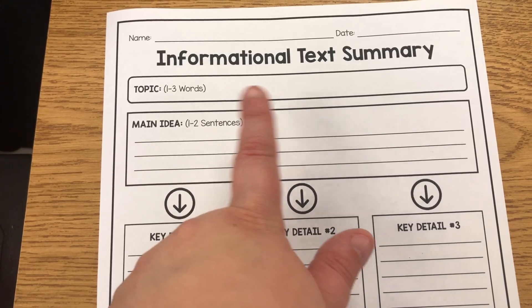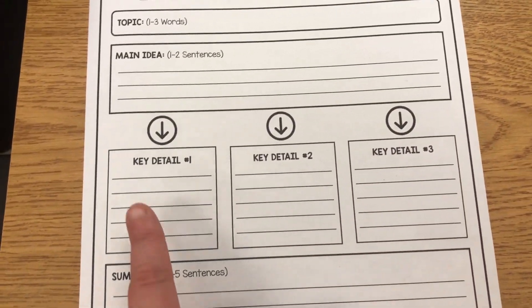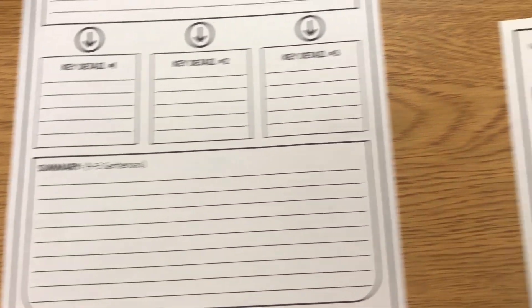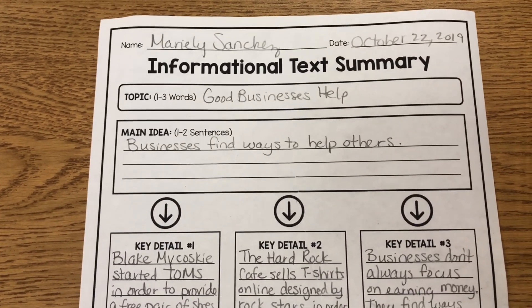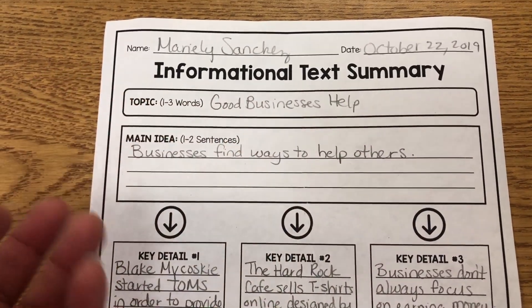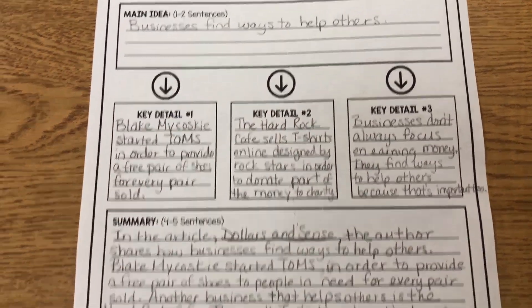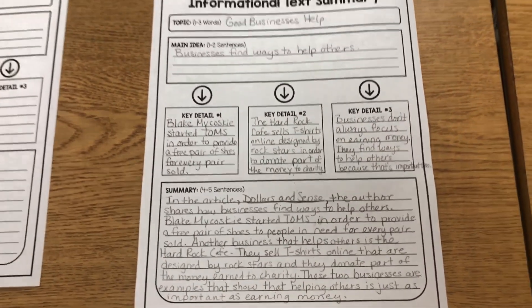After social studies, we went back to Reading Wonders: 'Dollars and Cents,' focusing on main idea and summarizing. Students put together everything we discussed about topic and main idea, finding three key details to support the main idea and then forming their summary. I gave them a handout I made quickly — it had the topic, main idea as one to two sentences, three key details, and then putting it all together into a summary paragraph. I showed my own example to walk them through the process.